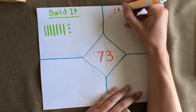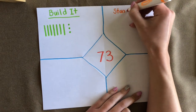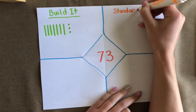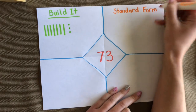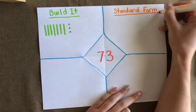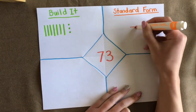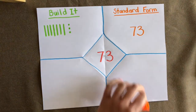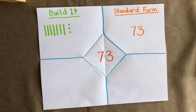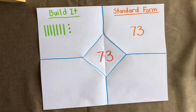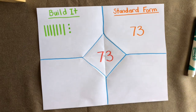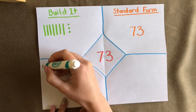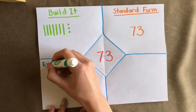In the next box let's do standard form. Standard form is just how the number is written — the digits that represent a number. Remember, a digit is like a letter in a word: digits make up numbers just like letters make up words.